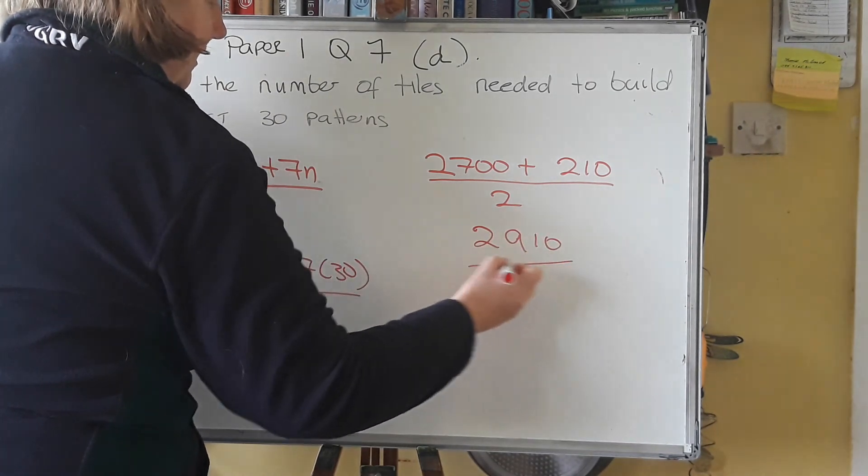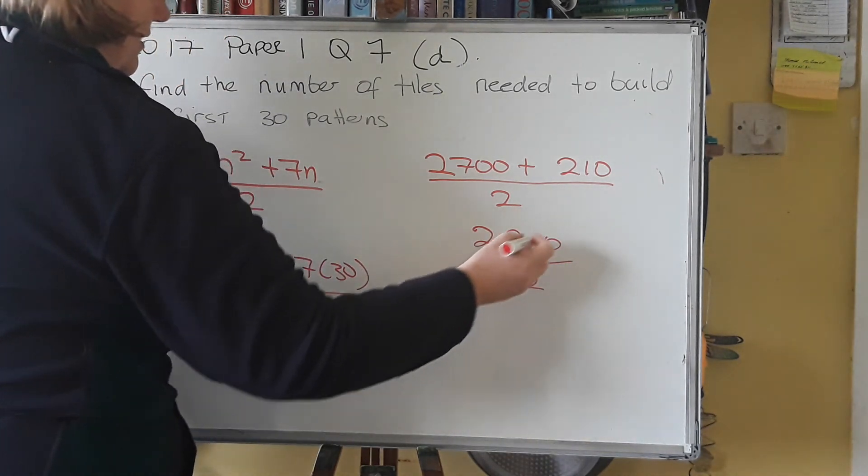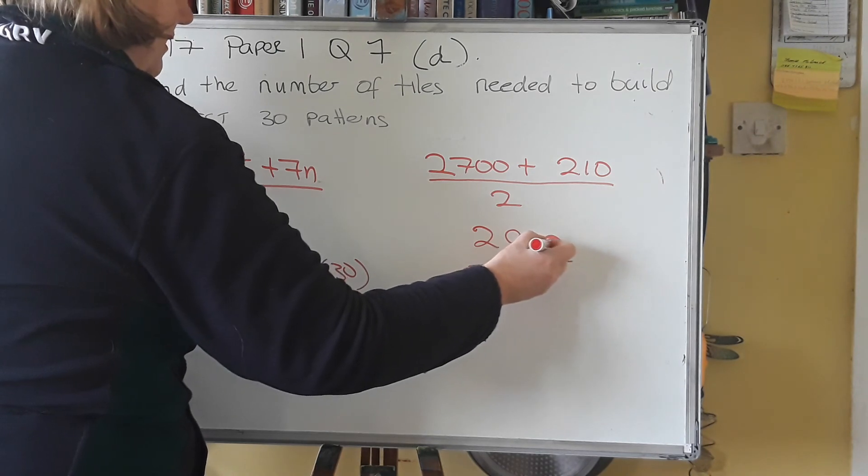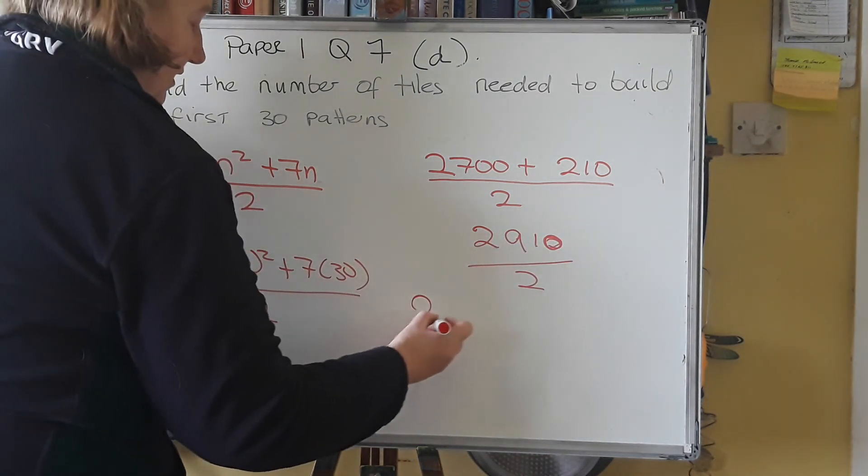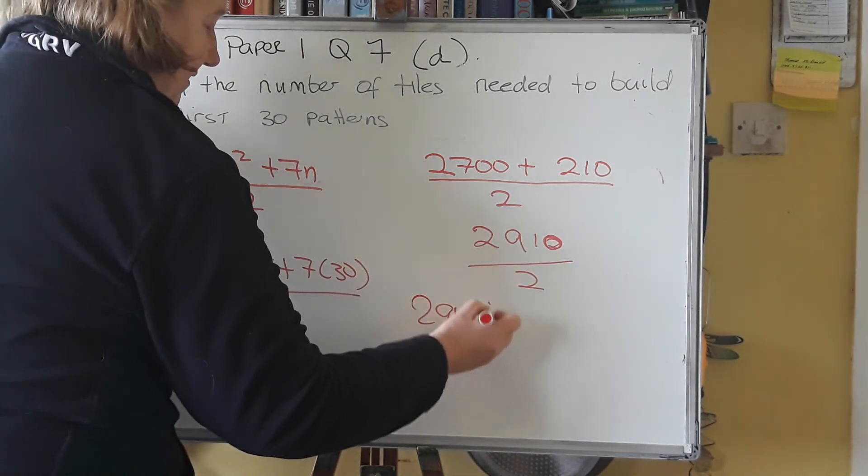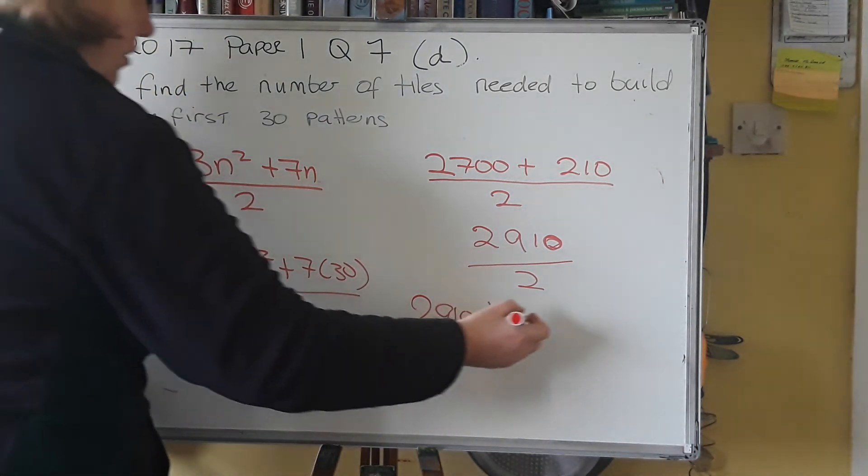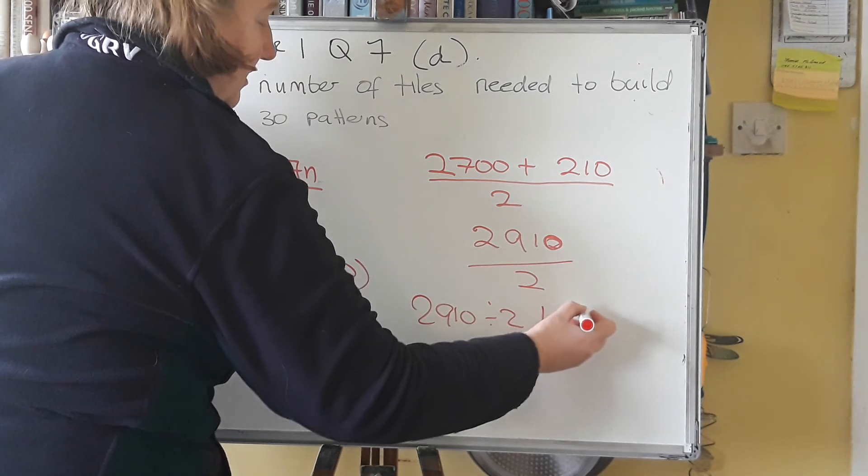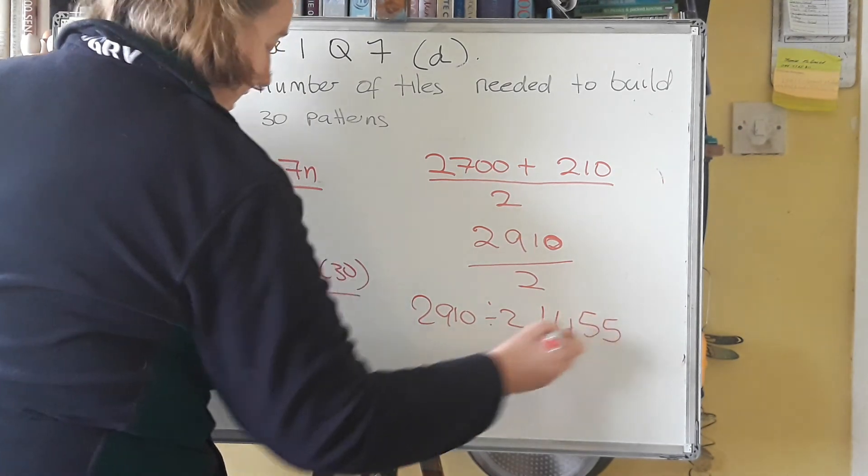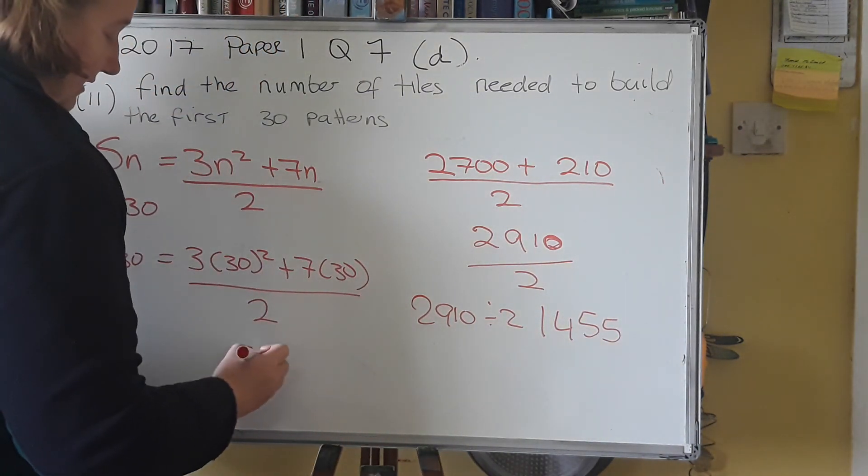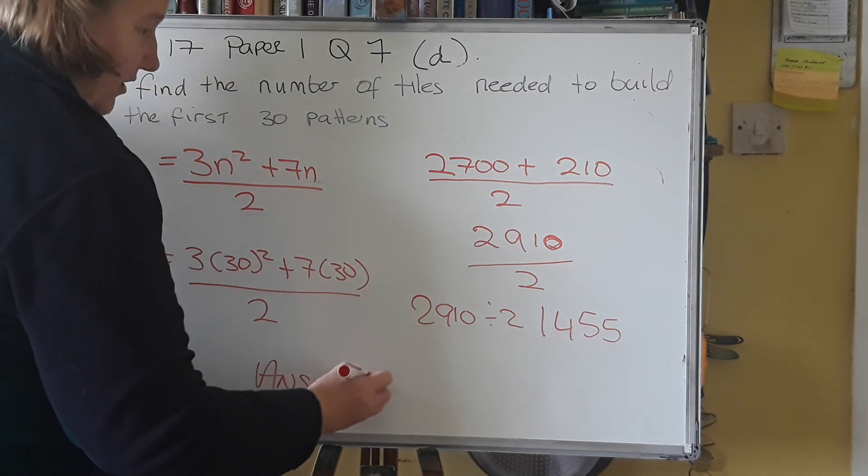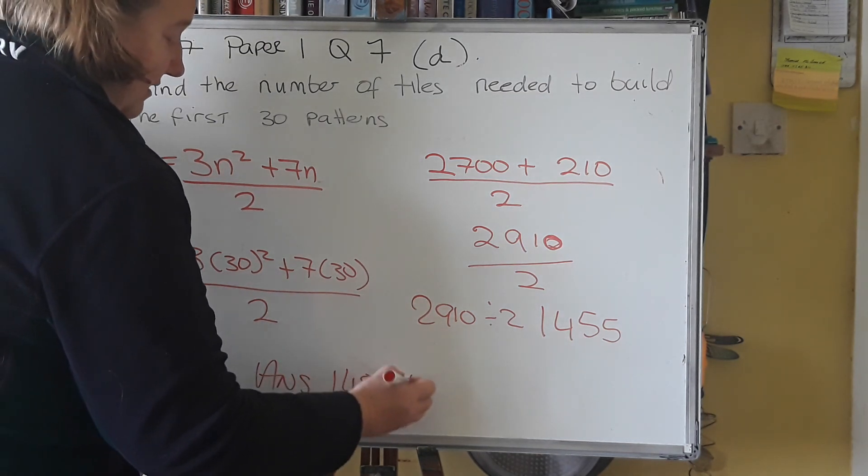So, 2,910 divided by 2. That's what over 2 means. Gives you 1,455. And so, your answer is you need 1,455 tiles.